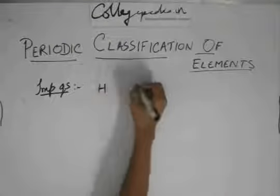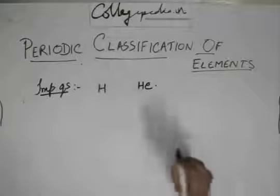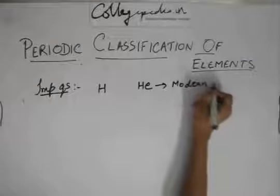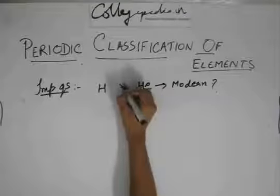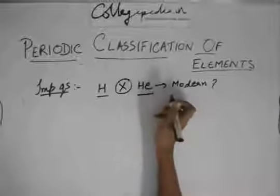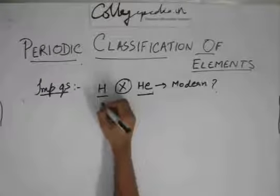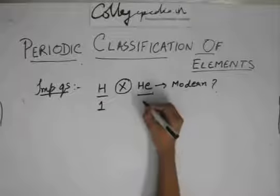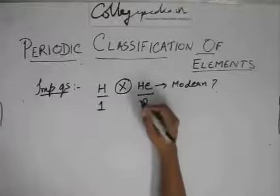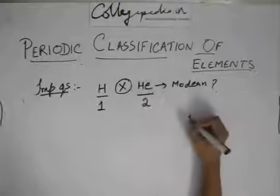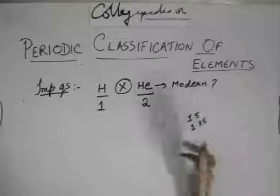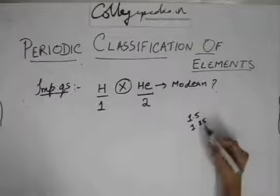Can there be any element between hydrogen and helium in the modern periodic table? Can there be any X between hydrogen and helium? So the thing is that hydrogen has an atomic number of one and helium has an atomic number of two. So to get an element between hydrogen and helium, you would need an atomic number of 1.5 or 1.75 or something like that, say one point something.